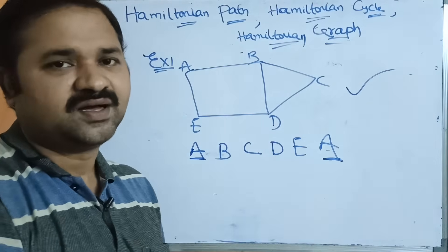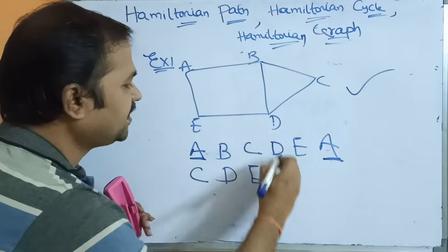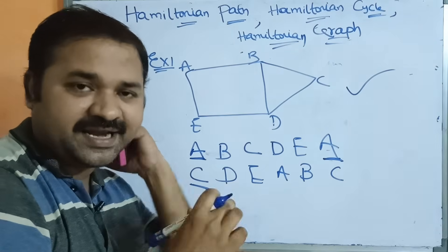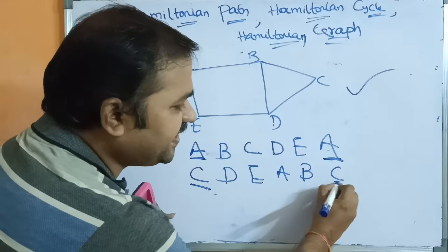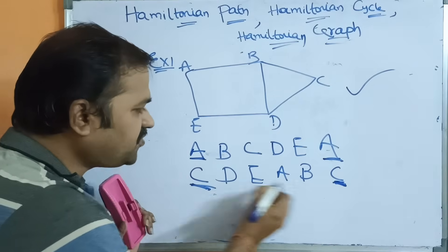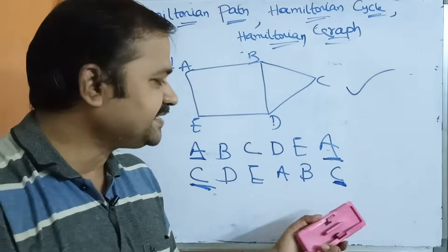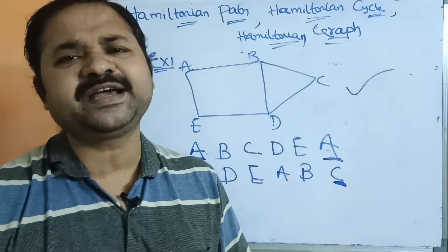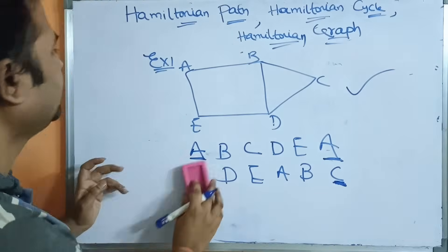A graph may contain several Hamiltonian circuits. For example, starting at vertex C: visit D, then E, then A, then B, then back to C. The remaining four vertices A, B, D, E are all visited and we return to the starting vertex C. So this is also a Hamiltonian cycle, confirming the graph is Hamiltonian.